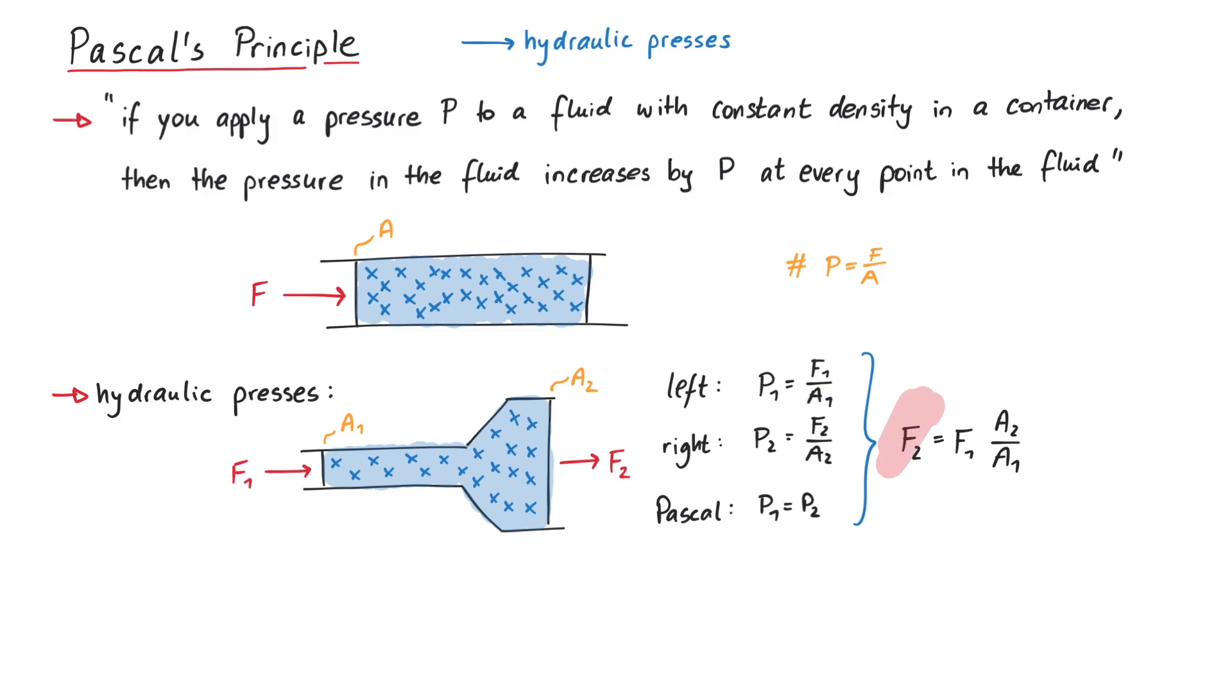So if A2 is twice as large as A1, then the force F2 is twice as strong as F1.